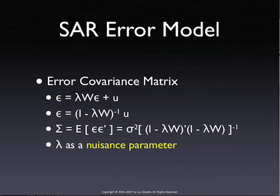Consistent meaning that in the limit, it reaches the correct value. You can use an estimate for the nuisance parameter that is lousy in terms of efficiency. As long as it's consistent, this very powerful result shows that using the nuisance parameter estimate in the main model will improve the estimate of the betas. So consistency only — not necessarily efficiency.